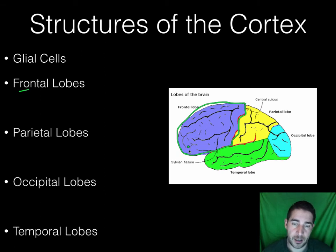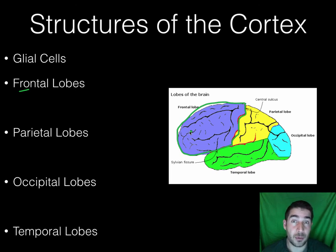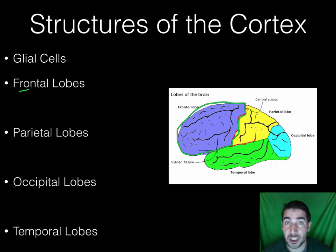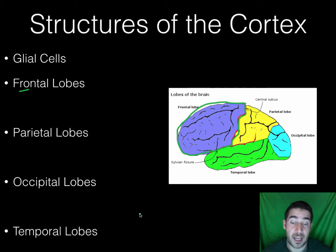If you have damage to the frontal lobe, it's going to probably affect who you are. If you had to describe yourself as a person, damage to this part would probably change how you'd describe yourself because you would physically change — you'd be affected in how you think, make judgments, or speak, depending on what part of that lobe was damaged.